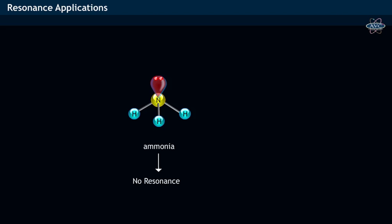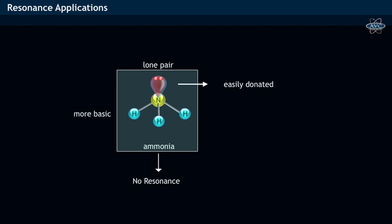While due to the absence of resonance in ammonia, the lone pair of electrons on nitrogen is easily donated to the proton, and this makes ammonia act as a strong base.